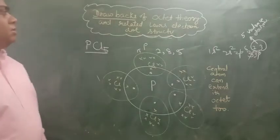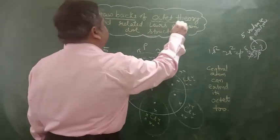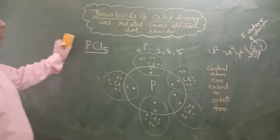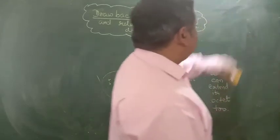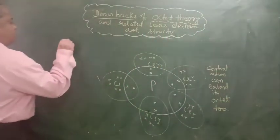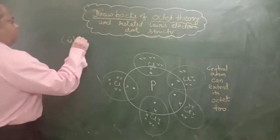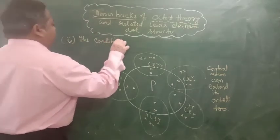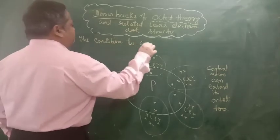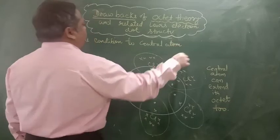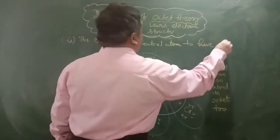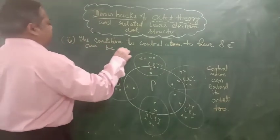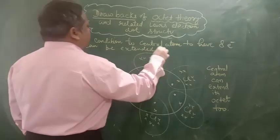That means there is no such condition in which 8 electrons are actually required. So can we write, after using this, that second drawback: the condition of central atom to have 8 electrons can be extended to more than 8 also.